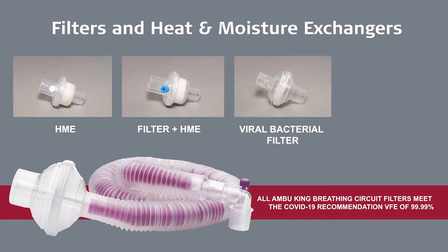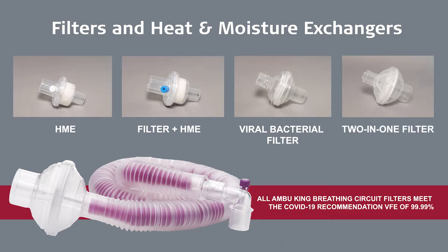Note that HME devices, whether they're combined with a filter or not, have to be placed close to the patient's airway to be effective, because if they're not close to the patient's airway, they can't maintain moisture in the patient's airway. Filters, on the other hand, are effective at the patient end or the machine end. So if you're using a combination device, it has to be at the patient end.